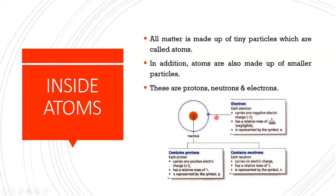Looking at the diagram of atom structure on screen, there is a nucleus shown in orange and outside there is an orbit, which we can call a shell. The nucleus of an atom contains two parts: protons and neutrons. Protons carry a positive electric charge of positive one and are represented by the symbol p.